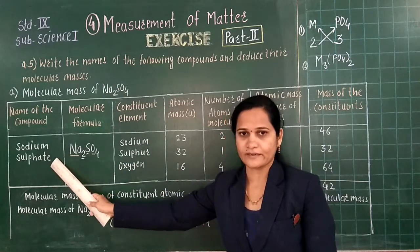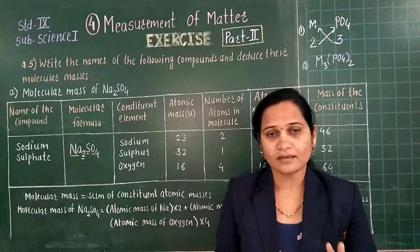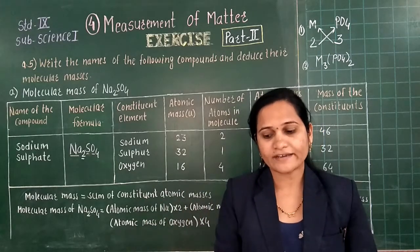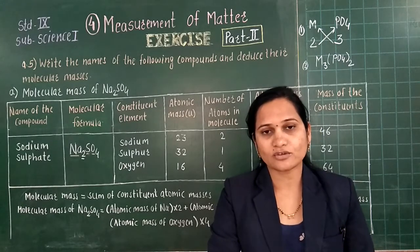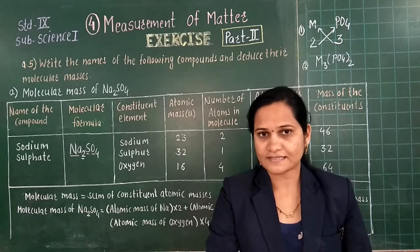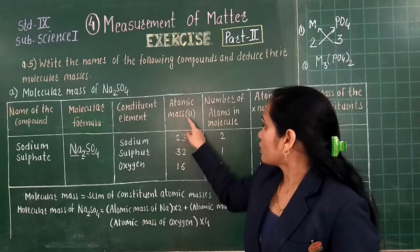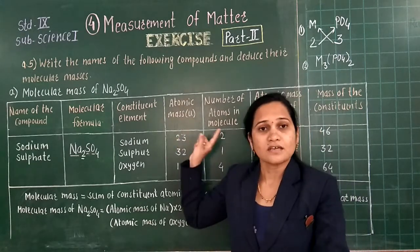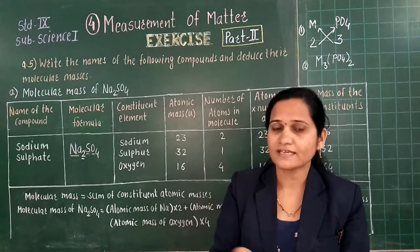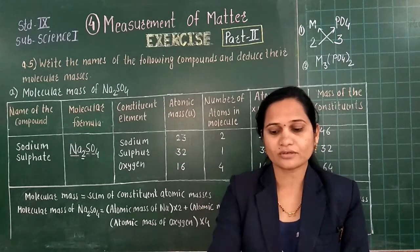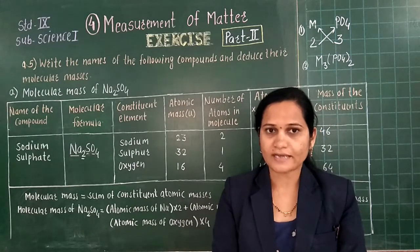Using this method and this table, you can easily calculate the molecular masses of the remaining examples. First write down the atomic masses from page number 51, then start to solve question number 5. Solve question number 4 and question number 5. We will see the next question in the next lecture.